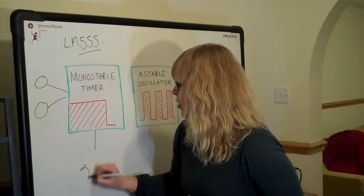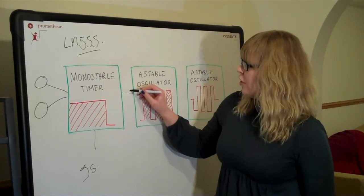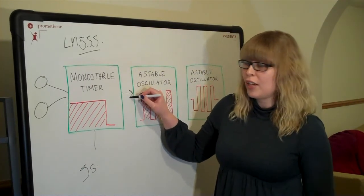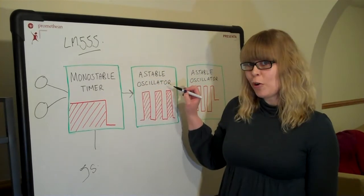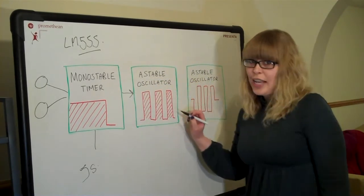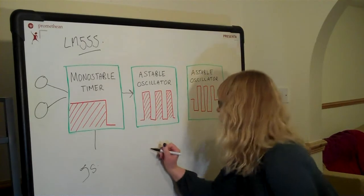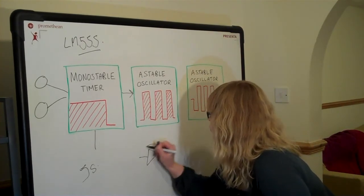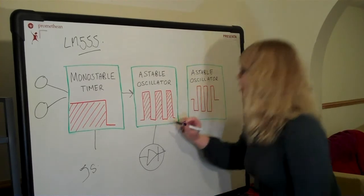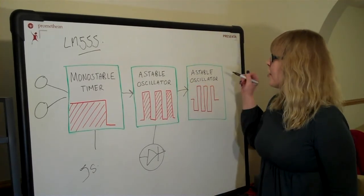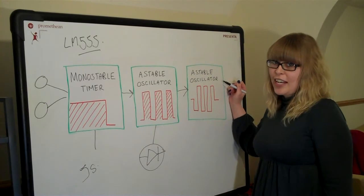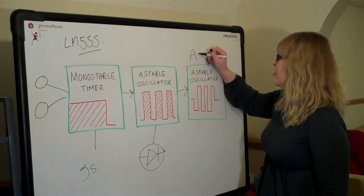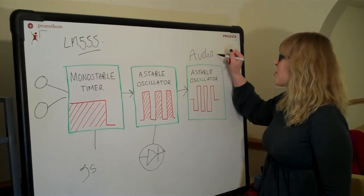This activates the timer for about five seconds and turns on the second 555, which is an astable oscillator. This oscillator flashes the LED and it also flashes the second astable oscillator, which is an audio oscillator.